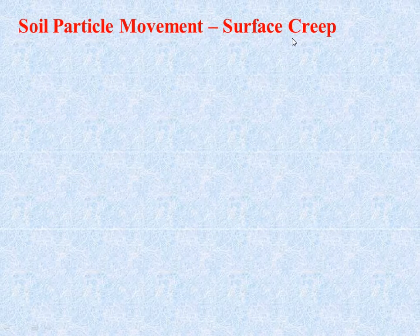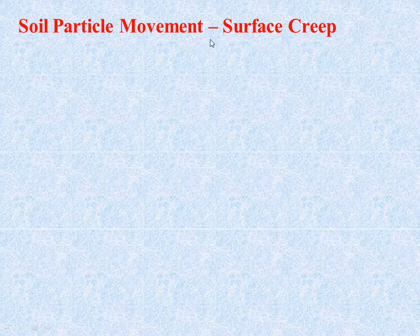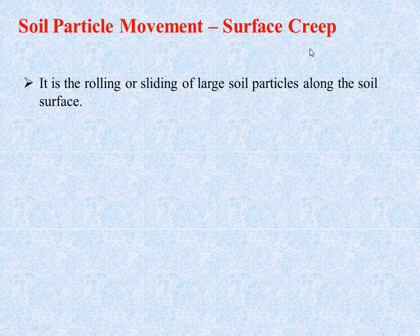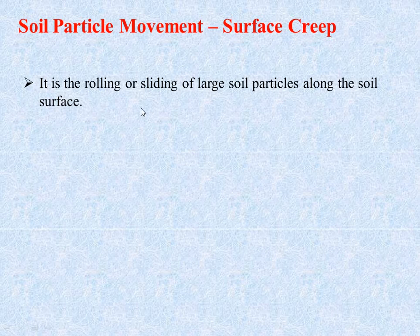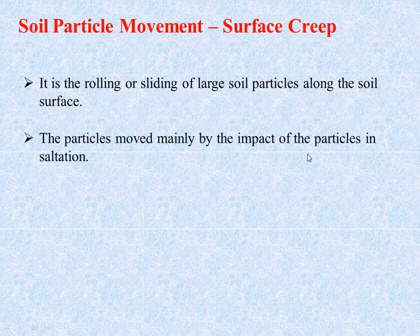There is another movement. These particles cannot be lifted by wind but can be rolled along the surface. Surface creep is the rolling or sliding of large particles along the soil surface, moved mainly by the impact of particles in saltation.